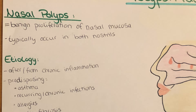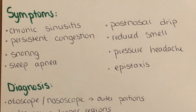Nasal polyps are benign proliferations of nasal mucosa and they typically occur in both nostrils. Regarding their etiology, they usually arise from a chronic inflammation. Predisposing factors are asthma, recurring or chronic infections, allergies, and cystic fibrosis.